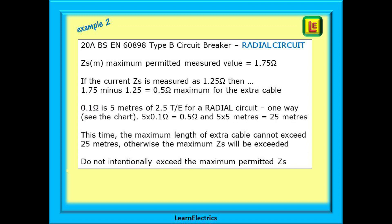In this next example we have a 20 amp BS EN 60898 type B circuit breaker in a radial circuit. The ZSM or maximum permitted measured value is 1.75 ohms this time. If the current ZS is measured at 1.25 ohms then 1.75 minus 1.25 is 0.5 ohms maximum for the extra cable. Looking at the chart 0.1 ohms is 5 meters of 2.5 millimeter twin and earth cable for a radial circuit. Now multiplying these up 5 times 0.1 ohms equals 0.5 ohms so 5 times 5 meters is 25 meters. This time the maximum length of extra cable cannot exceed 25 meters otherwise the maximum ZS will be exceeded and we should not intentionally exceed the maximum permitted ZS.